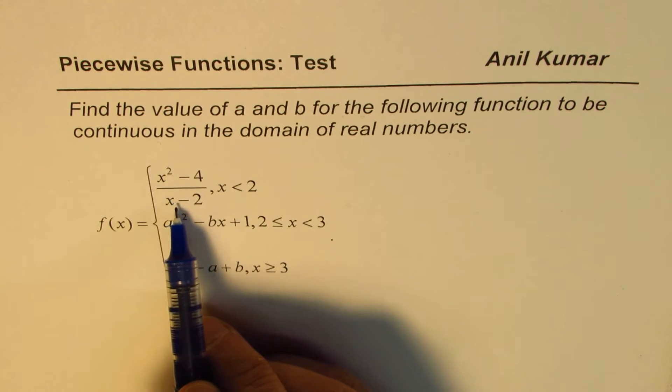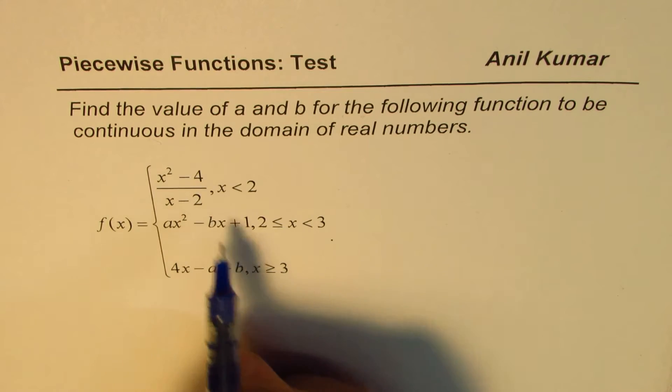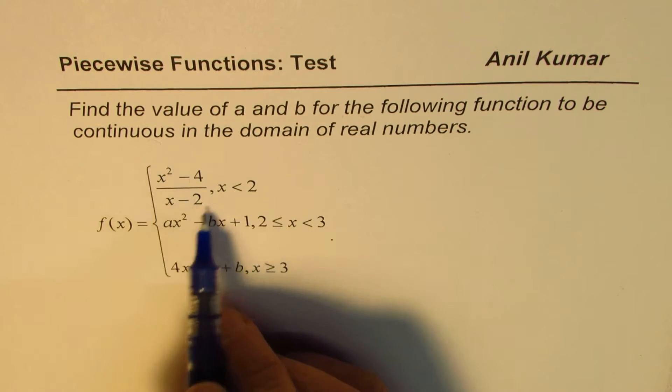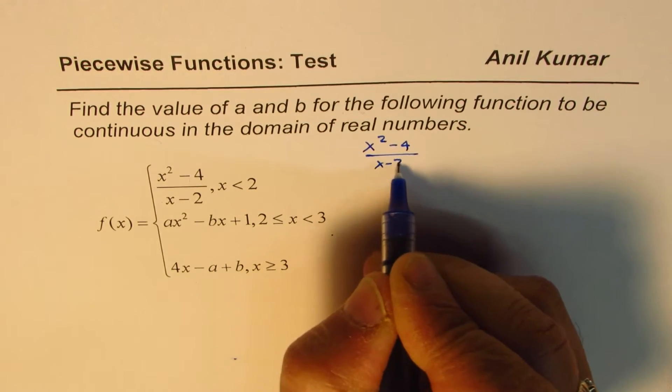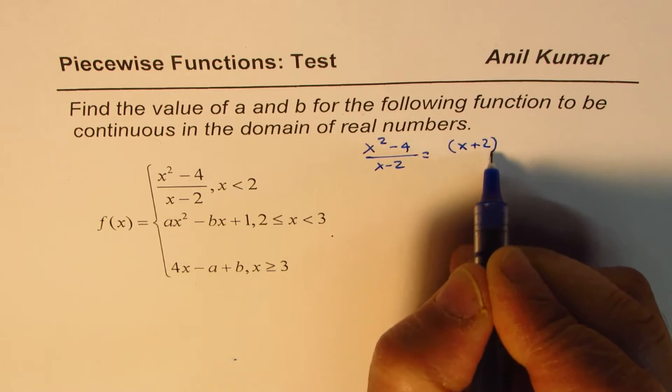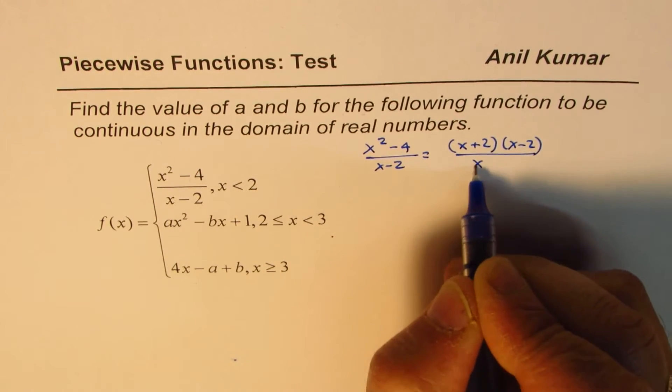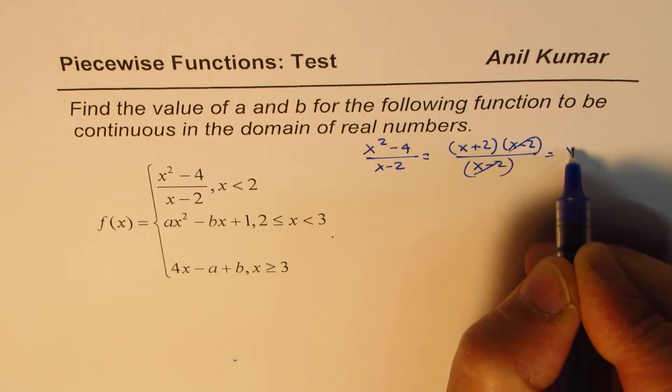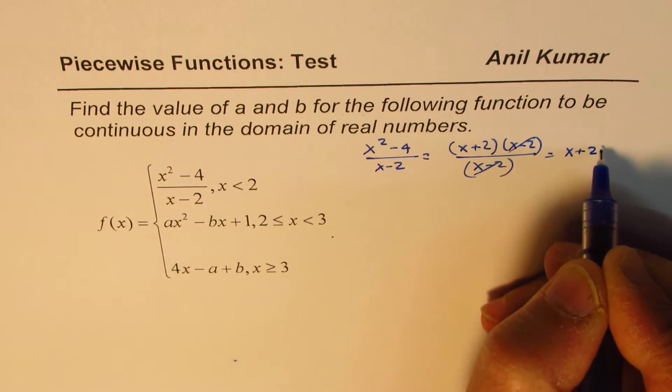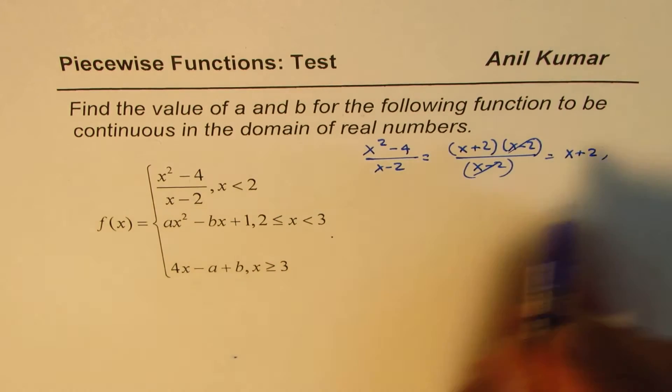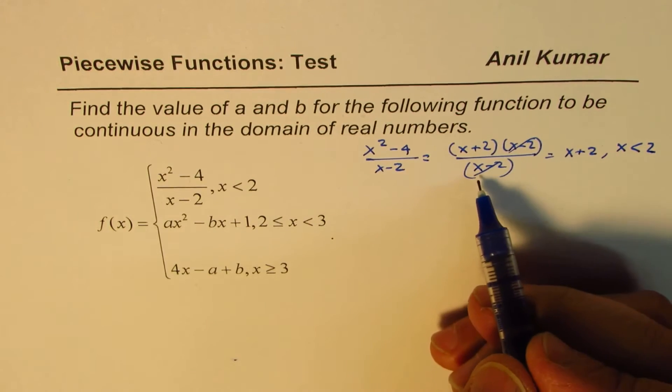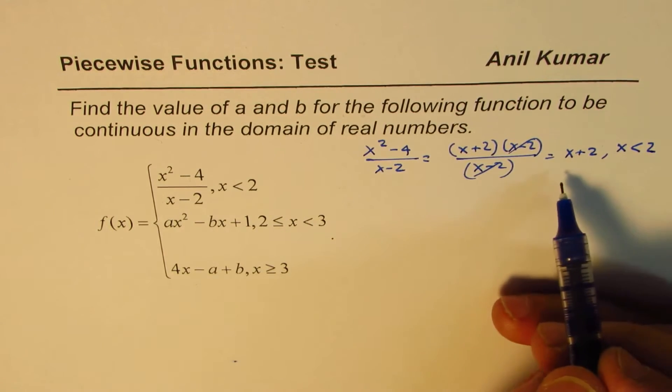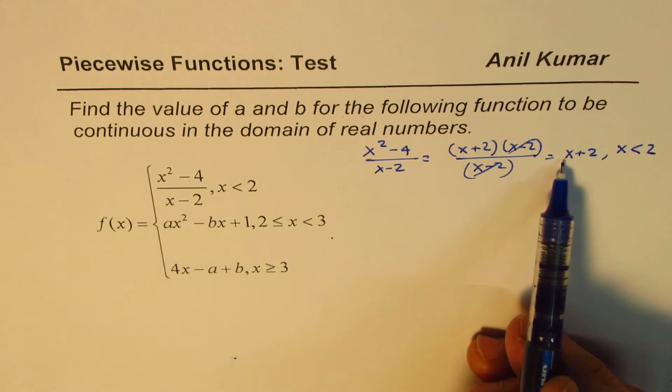Now if you substitute 2 in the first one, you get something over 0, which cannot be found, and therefore we have to use some techniques. So let's analyze the top part, which is x square minus 4 over x minus 2. It could be factored as x plus 2 times x minus 2 over x minus 2. This cancels out, so we get x plus 2. Since x is less than 2, we could cancel this out. We know x is not equal to 2. So this function could be actually written as x plus 2.